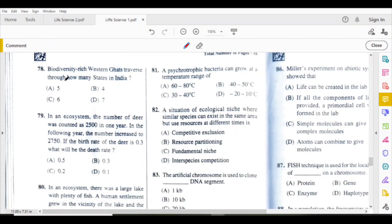Biodiversity-rich Western Ghats traverses through how many states? From north to south, you count 6 states.